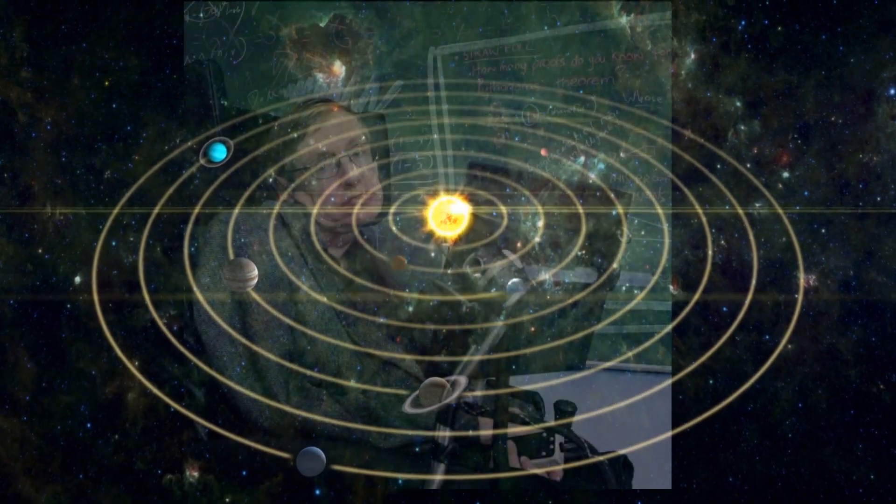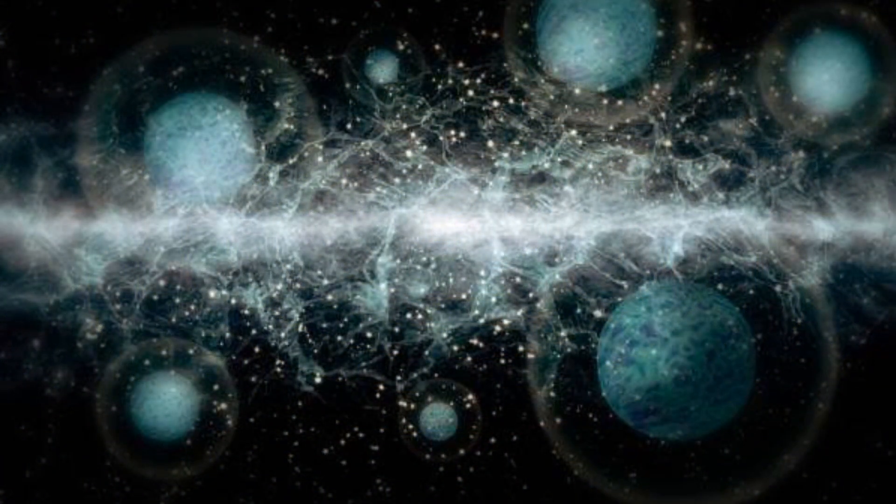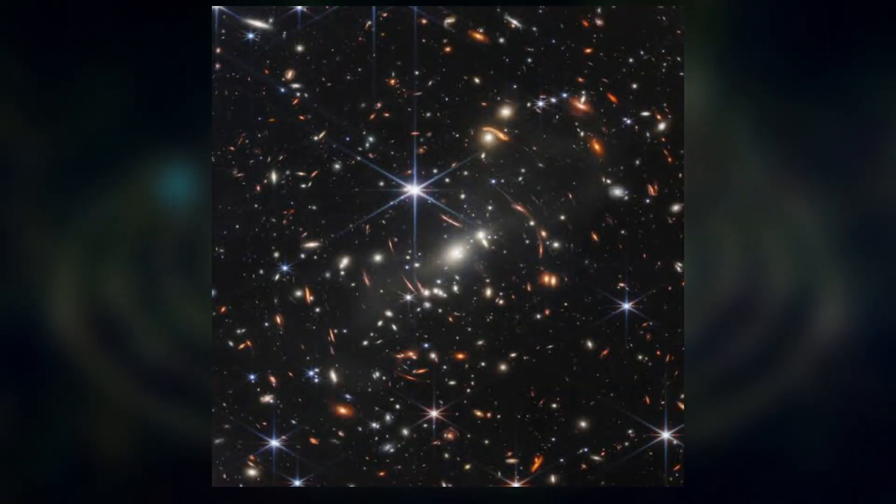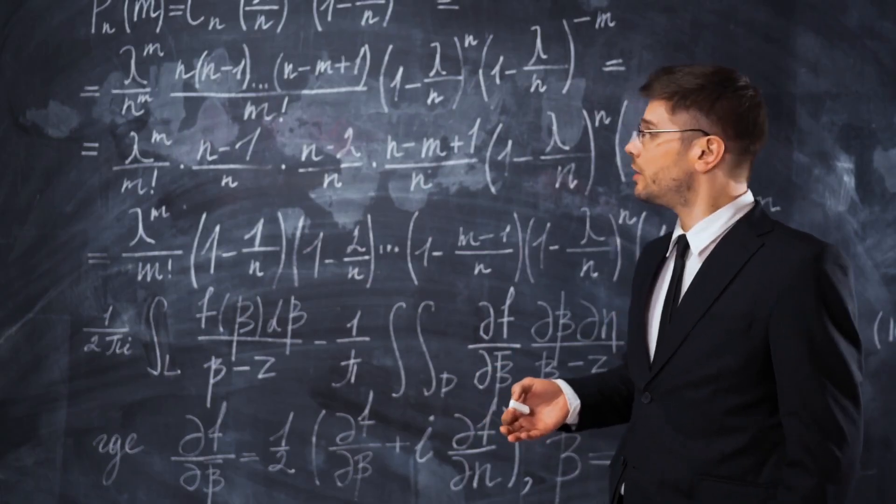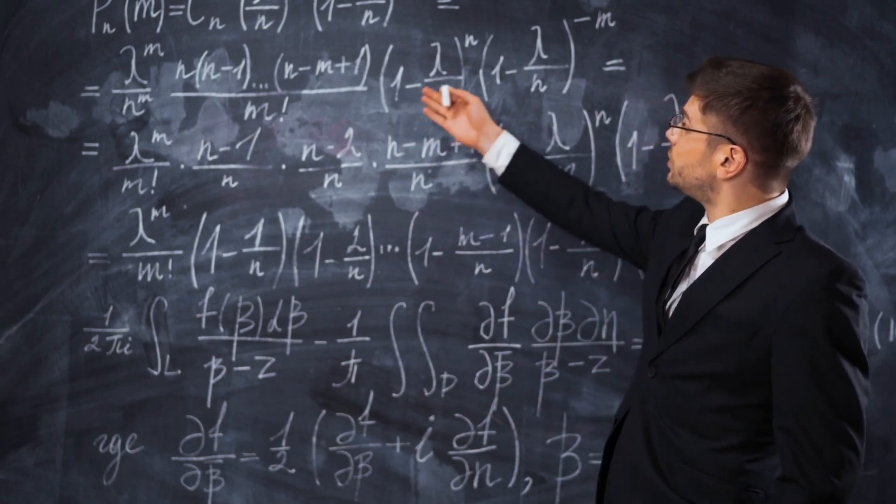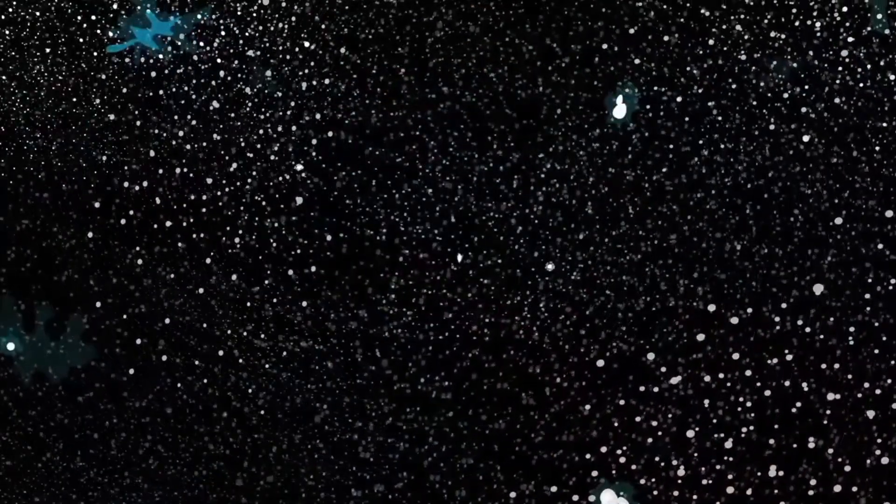According to Stephen Hawking's multiverse theory, there are an infinite number of universes, each with its laws of physics, and there is no way for us to know what these laws are. However, some universes may be hospitable to life, while others may not.